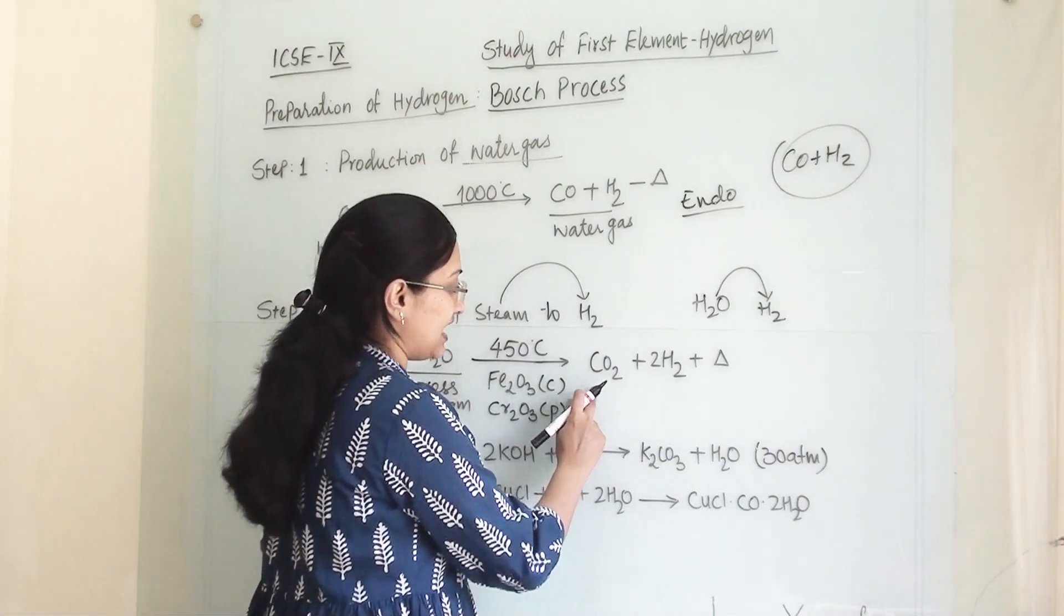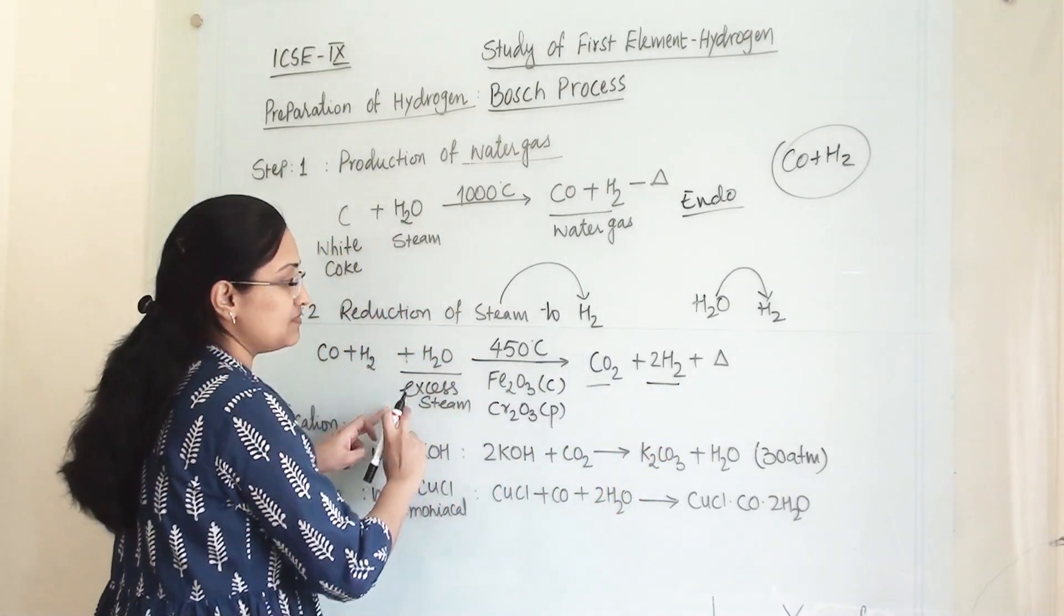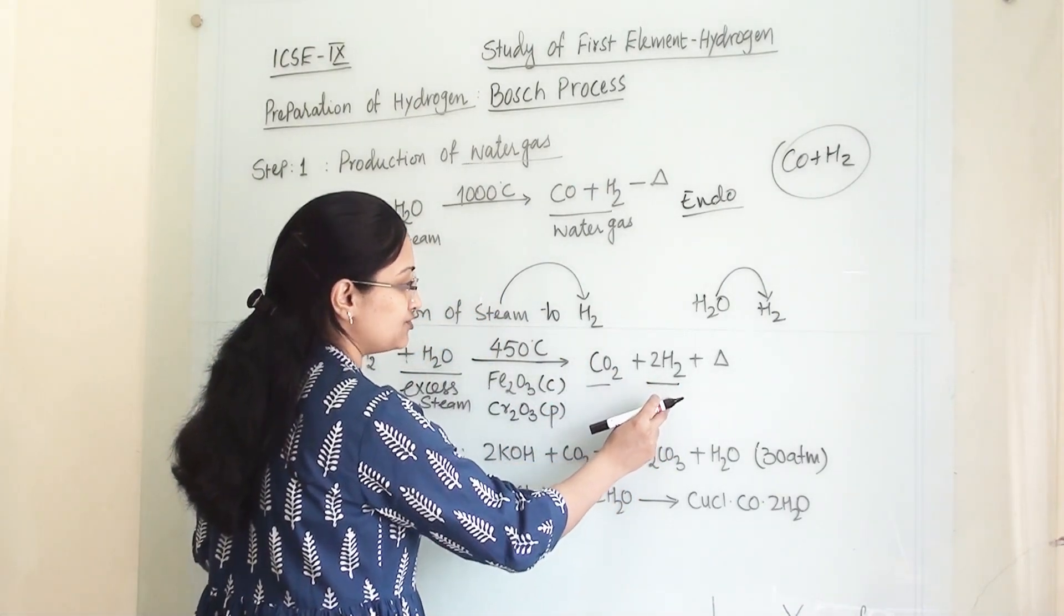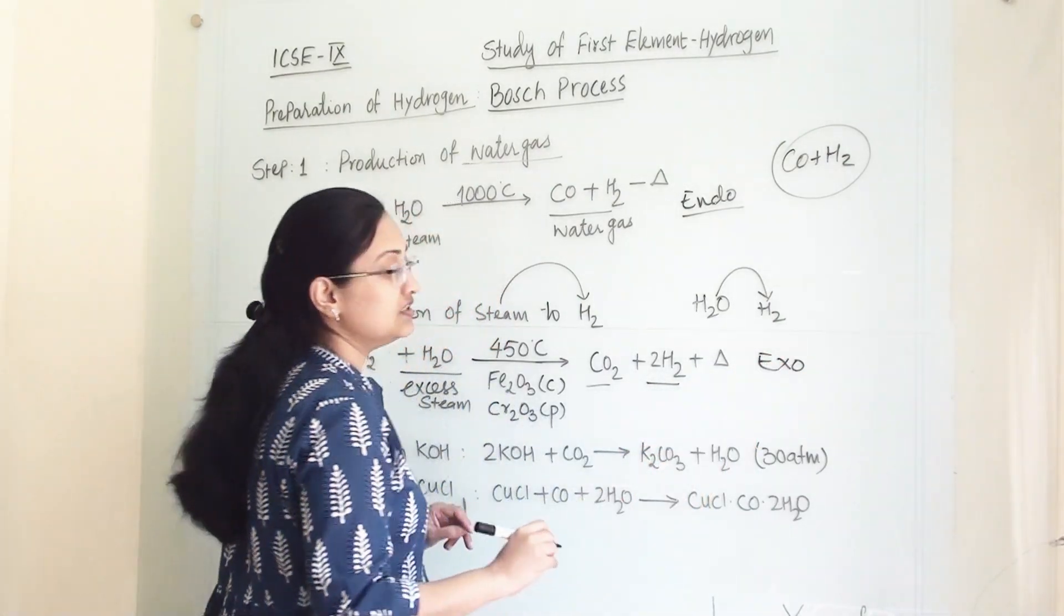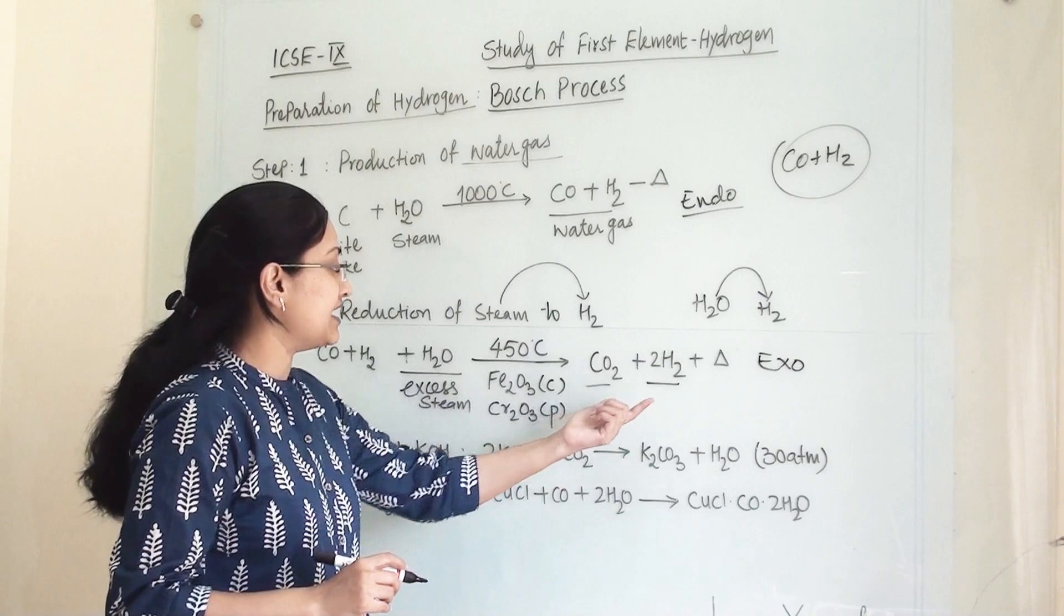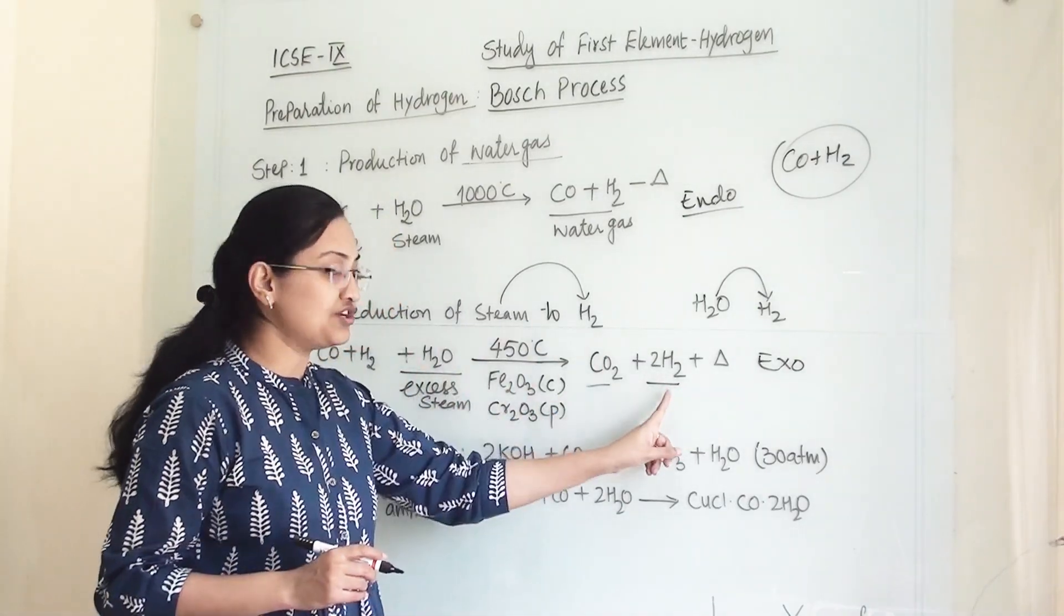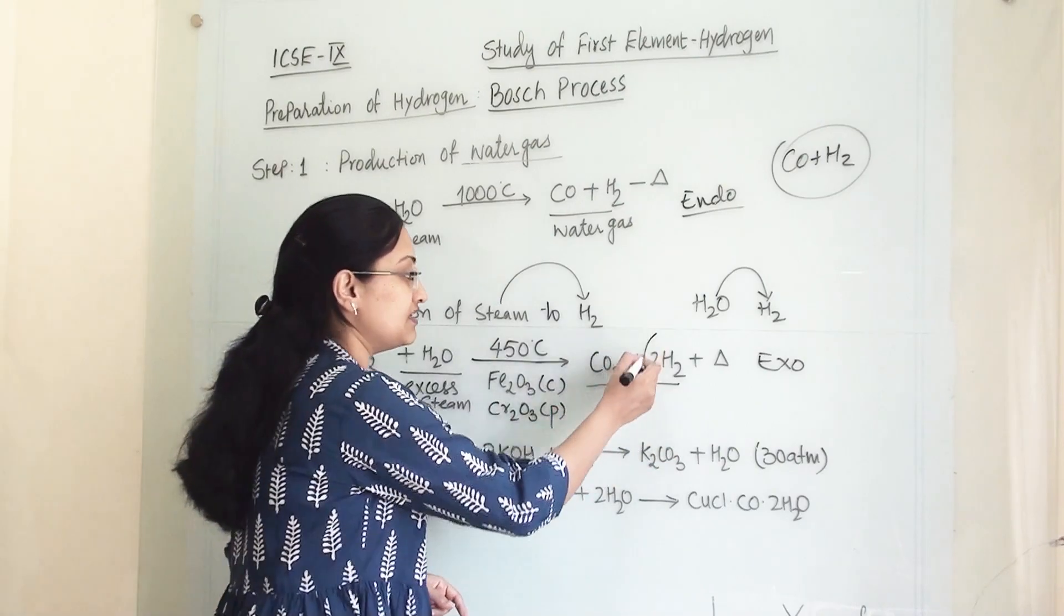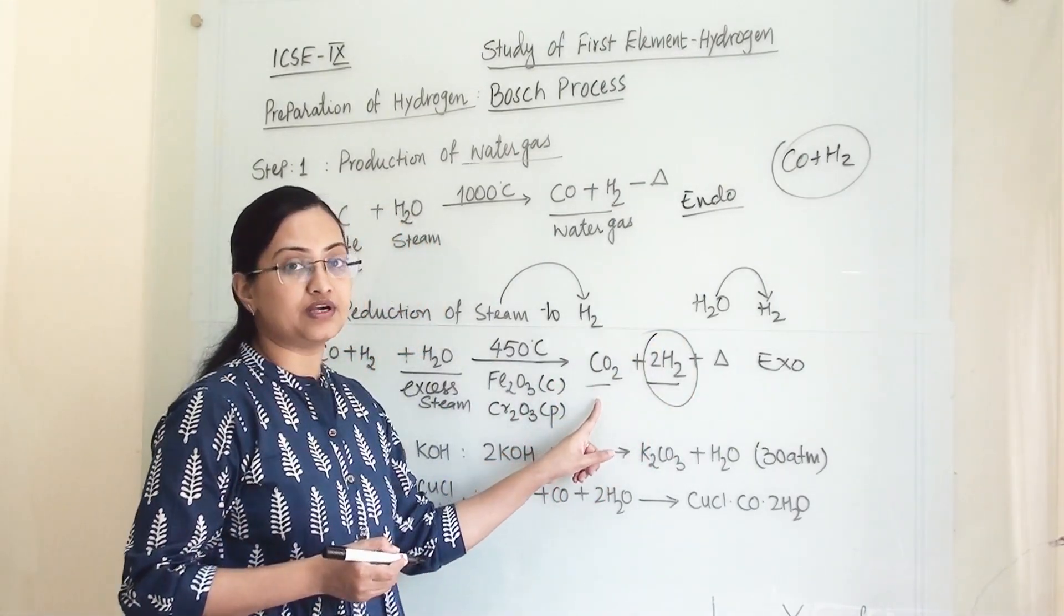Then we will get carbon dioxide and hydrogen. This steam has been reduced to hydrogen. This reaction is exothermic. A lot of heat will be generated at the end of the reaction. Our water has been reduced to hydrogen. This is our desired product, along with carbon dioxide.